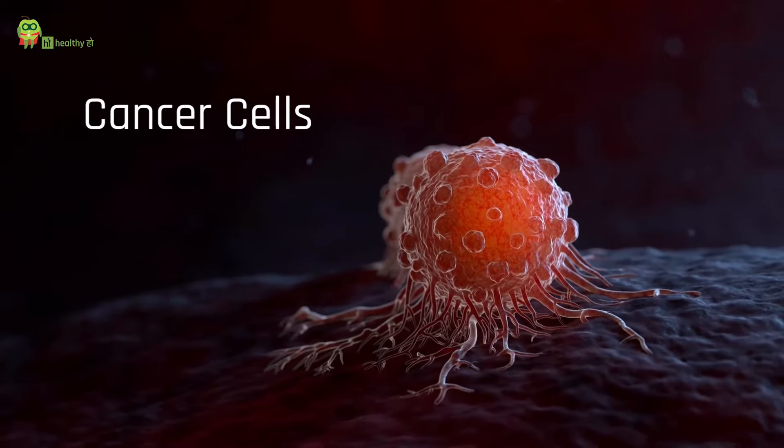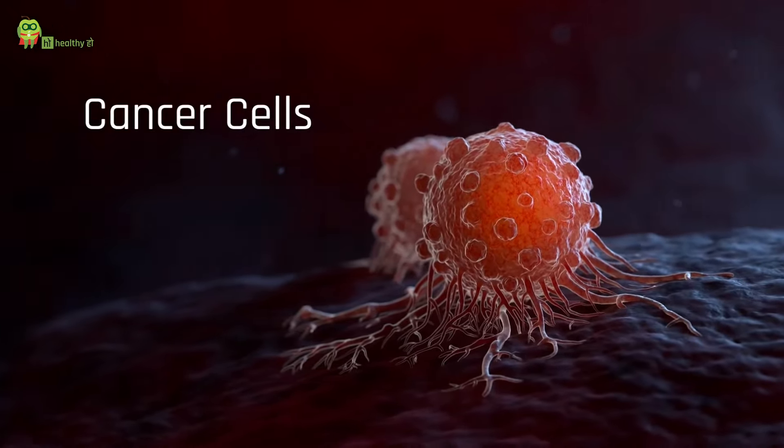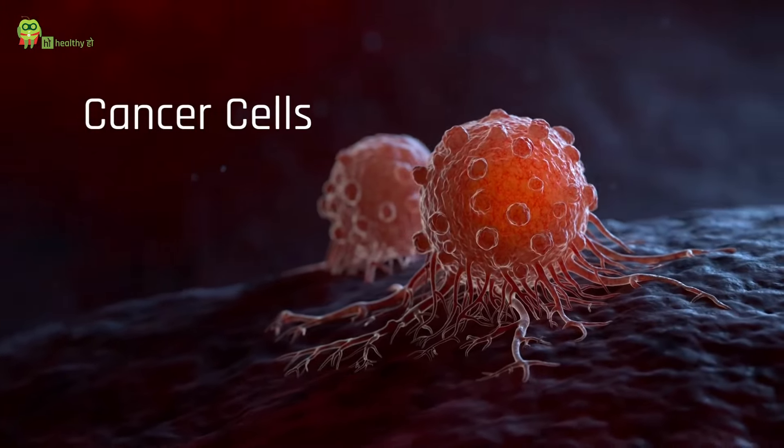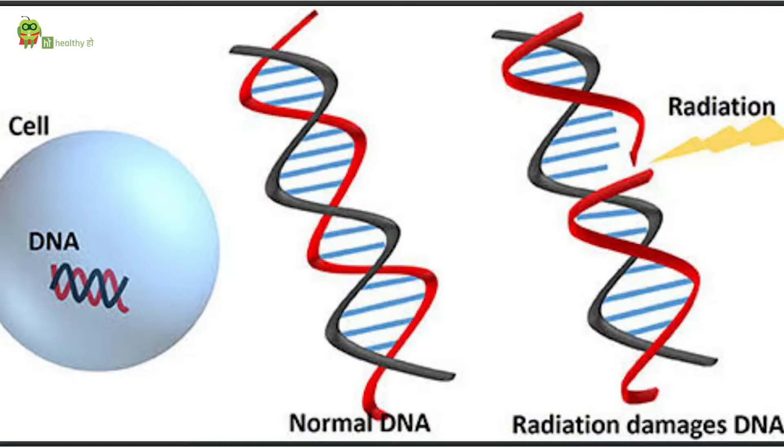Radiation therapy can be given in different forms — whether it is curative or for managing symptoms. How does radiation work on cancer? Cancer cells are cells in our body that are abnormal and divide without obeying normal body controls. This happens because of wrong or mutated DNA. Radiation therapy damages that abnormal DNA — it hits and cuts it — stopping cancer cells from multiplying.